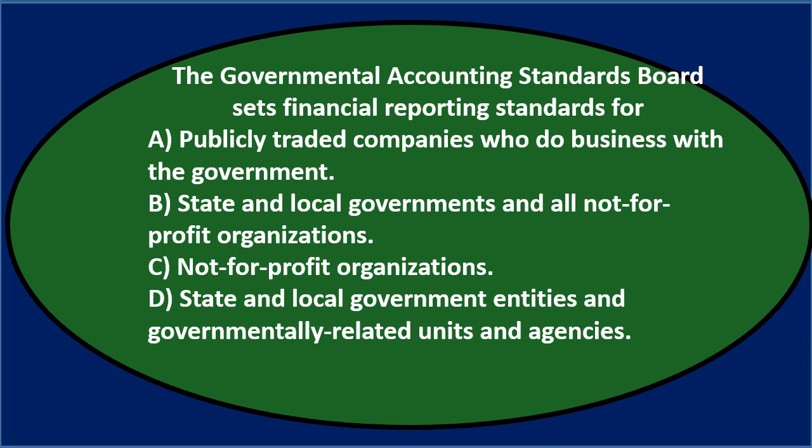Let's go through this using the process of elimination. Option A, publicly traded companies who do business with the government — this is not going to be it because they are publicly traded for-profit. We can also eliminate it by noting no other option mentions private-type companies, so it appears to be an outlier.